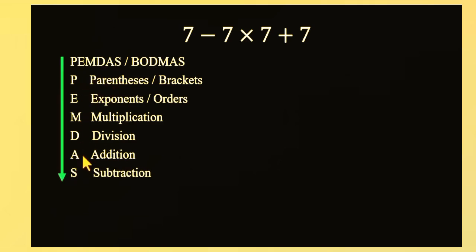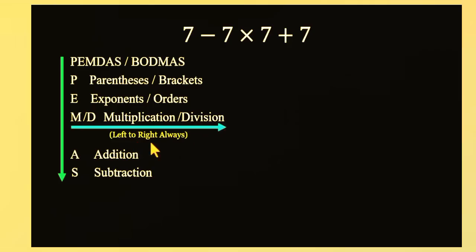And here's the key rule many people forget. When two operations share the same level, like multiplication and division, you always move from left to right. The same holds for addition and subtraction. Left to right, always.